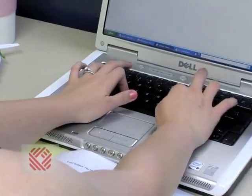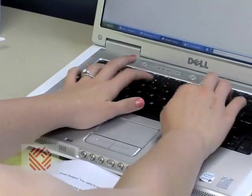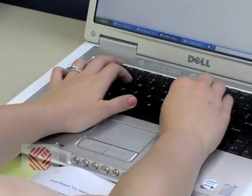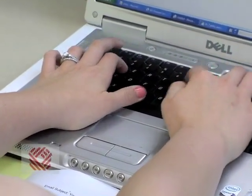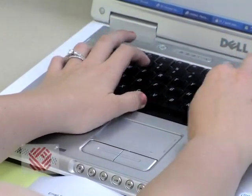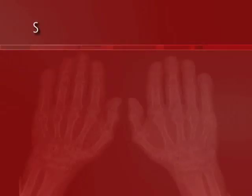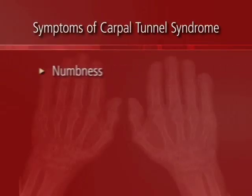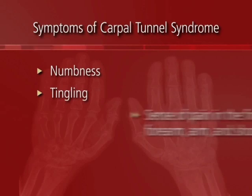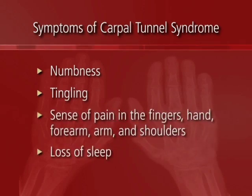There has been some link to less active but repetitive activities such as typing. Most often the symptoms from carpal tunnel include numbness, tingling, and a vague sense of pain in the fingers, the hand, and sometimes radiating up into the forearm and arm — and sometimes even the shoulder.